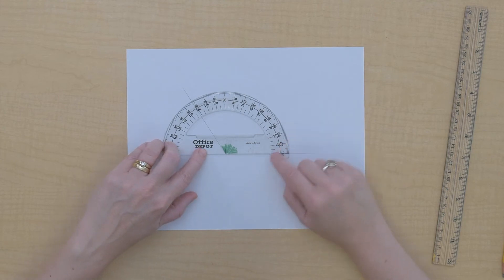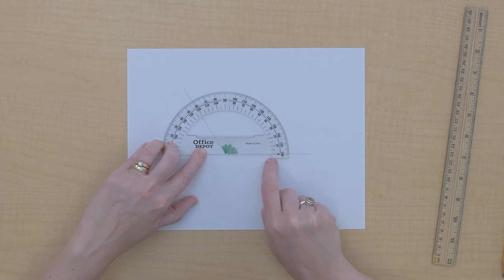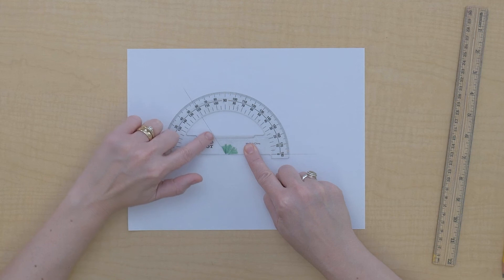And I need to be sure that the other side of my angle is right straight on this zero. And now I can follow my angle as it goes out here to see its value.